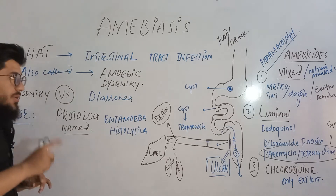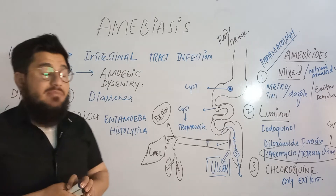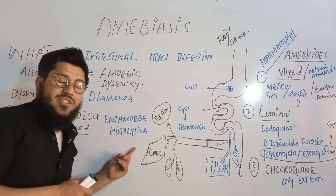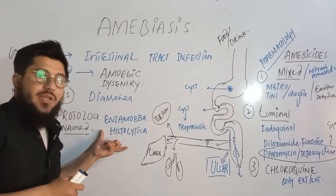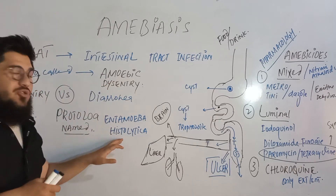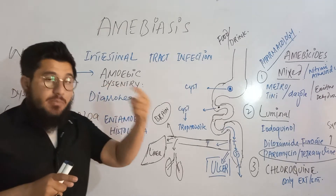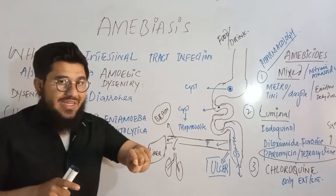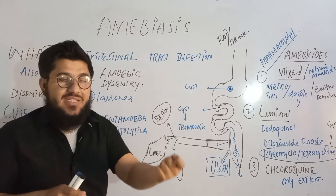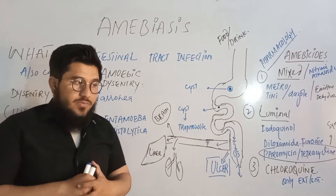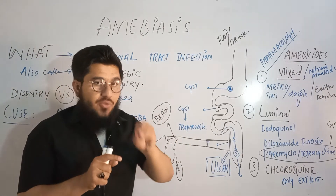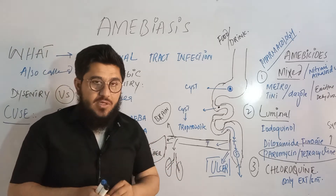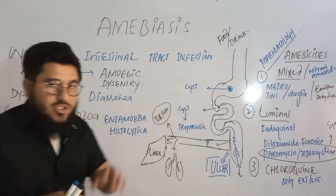The main cause of MEBS is a protozoan named Entamoeba histolytica — the prominent cause of amoebic dysentery. Note that some bacteria can also cause dysentery, but that is bacterial dysentery, not amoebic dysentery. Both protozoa and bacteria are responsible for causing dysentery, but here we are focused on the protozoal form.